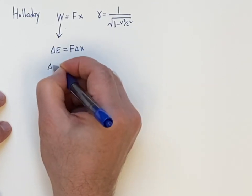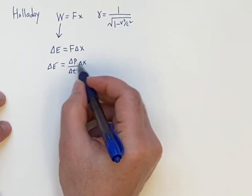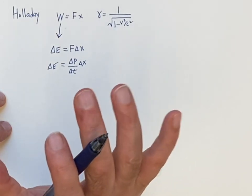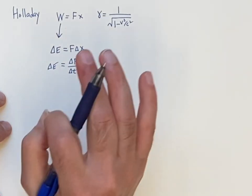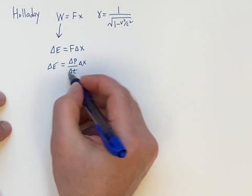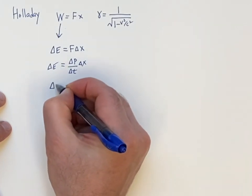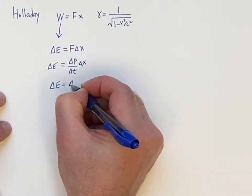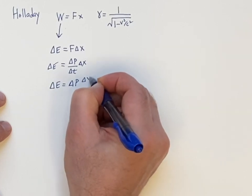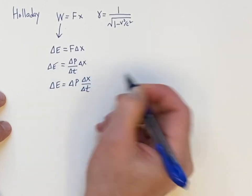And then since these deltas have not gone to limits to zero yet, they're not infinitesimal, we can move around deltas easily and not upset mathematicians. So we can then write delta X over delta T.